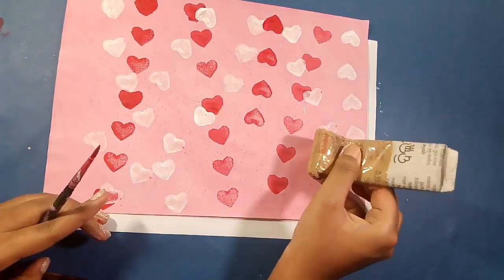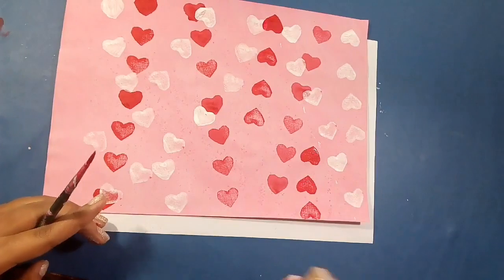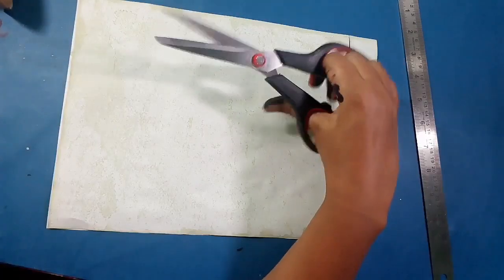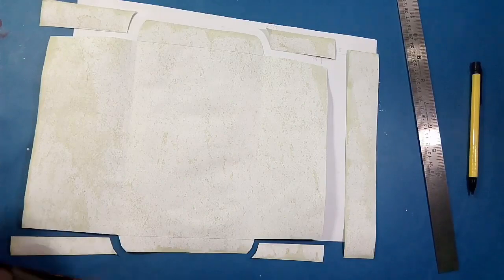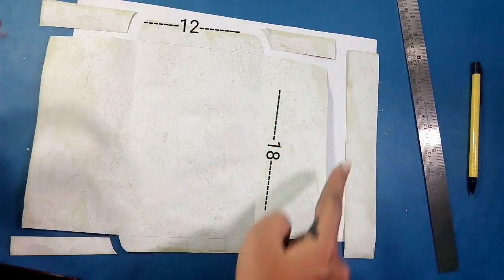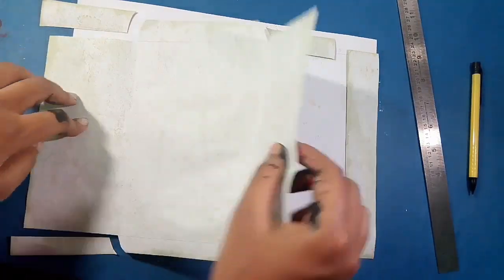You can stamp on sheet and fold it into an envelope or you can simply get an envelope and stamp on it. I am making an envelope here of the dimension 12 by 18.